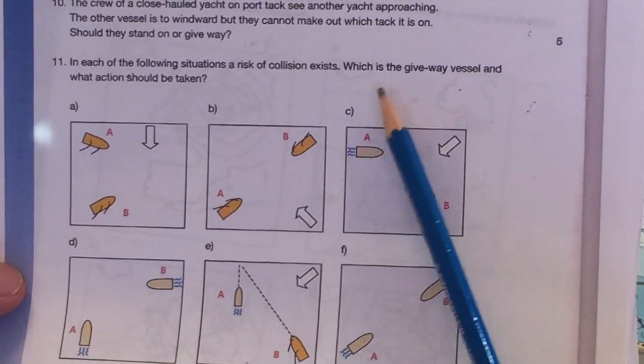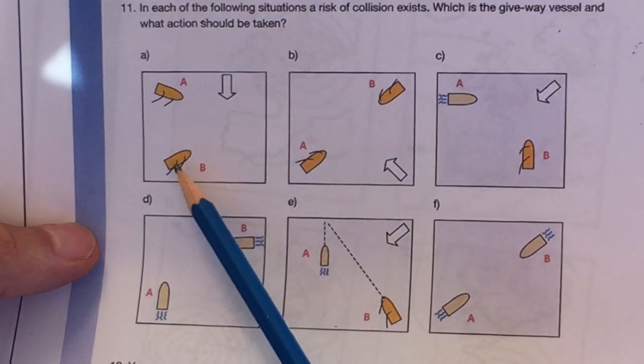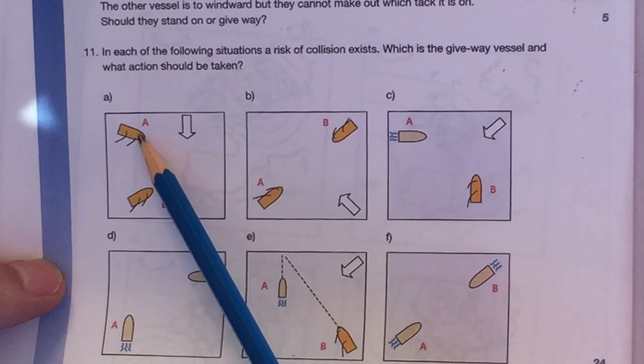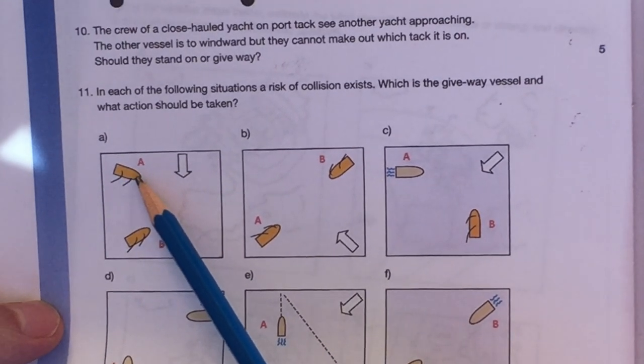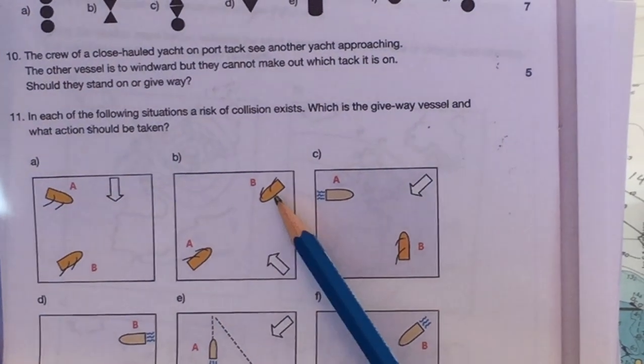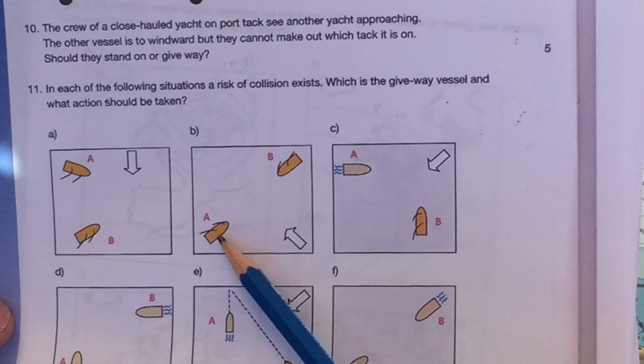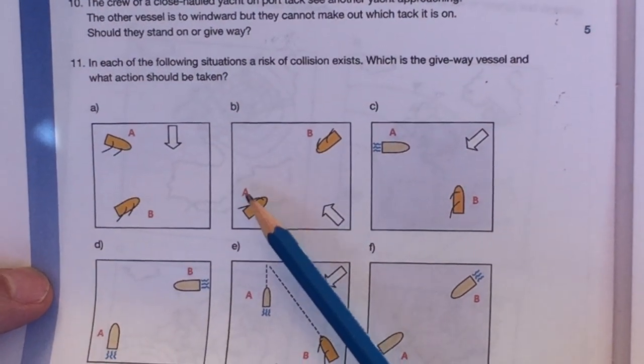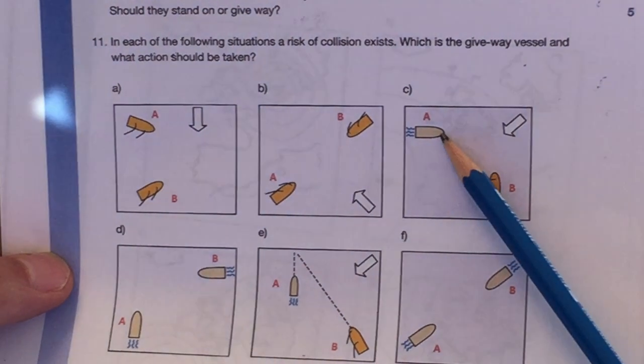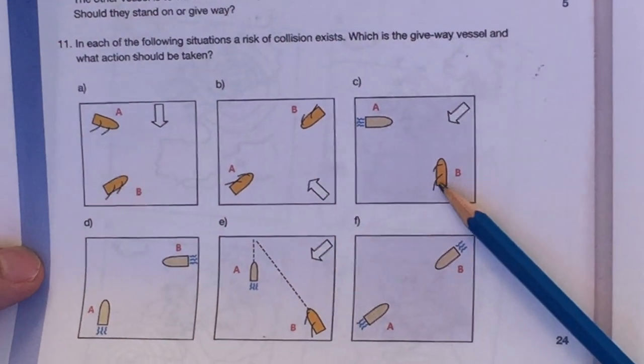In each of the following situations, a risk of collision exists, which is the give-way vessel and which action should be taken. Okay, wind is coming from here, two sailboats. This is the give, the A is the give-way vessel because it's to windward. It's on a port tack, well they're both on port tack, so yeah, A is the give way. Okay, in this case, two sailboats coming head-on, and normally you would just alter course to starboard anyway, to stay clear, but A vessel is the starboard tack, so that's the stand-on vessel, so B is the give way vessel. Okay, C, you've got a motor vessel, and you've got a sailboat. Motor yachts give way to sailboats, period.